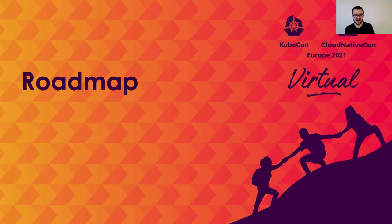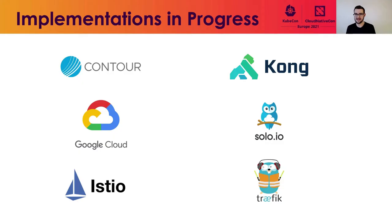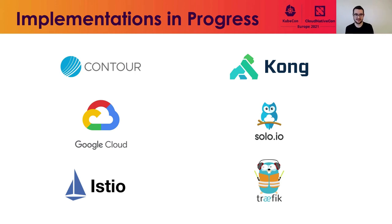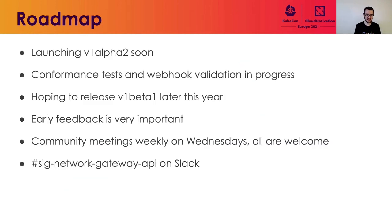Let's talk about our roadmap. One of your first questions is probably: how can I use this, how can I test this out? The great news is there are already some awesome implementations in progress: Contour, GKE, Istio, Kong, Solo, and Traefik. In many cases, these implementations are already ready for you to test out. As far as the API itself, we're planning on launching a second alpha version soon — V1 Alpha 2. And to improve experience and consistency, we're working on conformance tests and webhook validation. We're hoping to release V1 Beta 1 later this year, which will bring much more API stability.